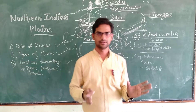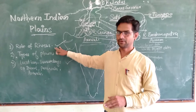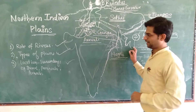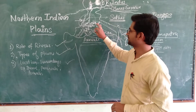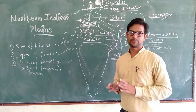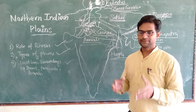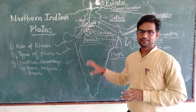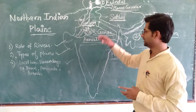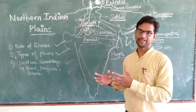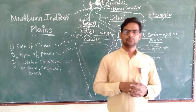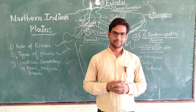In this session, we got information about the role of rivers in the formation of plains, and the types of plains — Punjab Plains, Ganga Plains, and Brahmaputra Plains. We also learned about their surrounding areas. Plains are most important for agriculture because rivers deposit very fertile soil on their banks, which is suitable for farming. River water is also available there, which is why these river areas are densely populated and used for agriculture purposes.